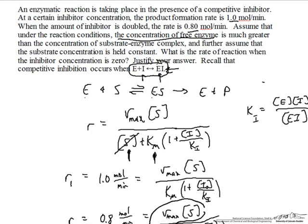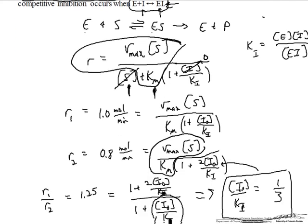So we're interested in the rate when the inhibitor concentration is zero, and that is just the classical rate associated with the Michaelis-Menten expression under conditions where we have lots of free enzyme, so under conditions where we can ignore the concentration of S in the denominator. Therefore the rate is just equal to V_max times the concentration of S divided by K_m, and so our rate is 1.33 moles per minute.